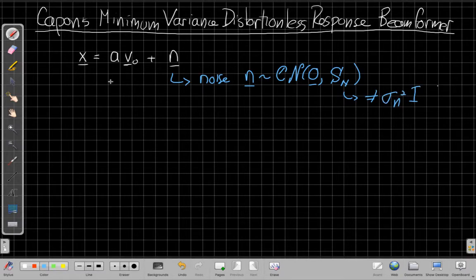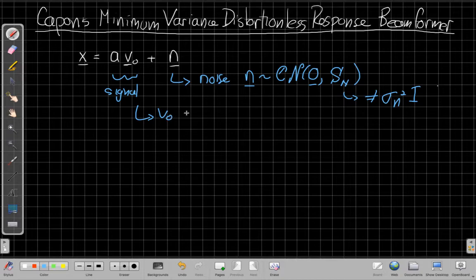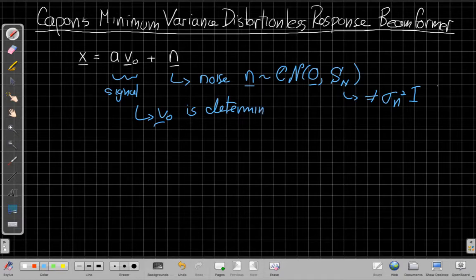And then this is our signal term. And what we assume about this is that V0, the array manifold, is deterministic. We know what it is. We know where we're looking. This is sort of where we're looking, but we don't necessarily know what the amplitude is. We might be trying to detect something or estimate something.